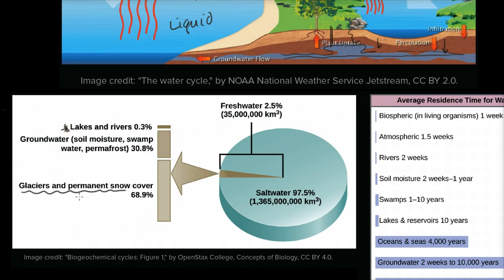And even of that 2.5% fresh water, very little is what we traditionally associate with fresh water — lakes and rivers. Most of it is actually in glaciers and permanent snow cover: ice and snow that is just not melting. You also have groundwater, which includes soil moisture, swamp water, and permafrost — that's why people dig wells. Very little of the water is actually in lakes and rivers, which is fascinating.